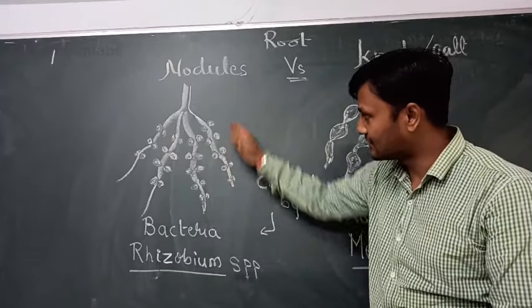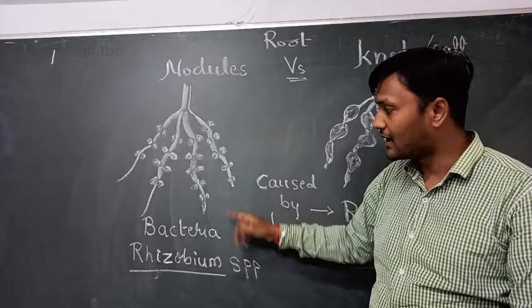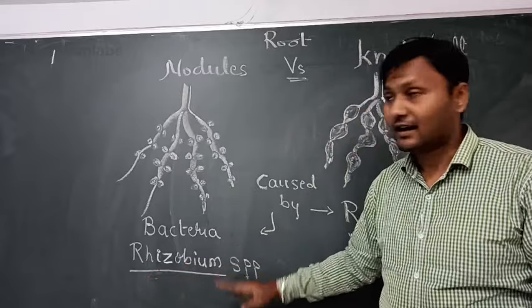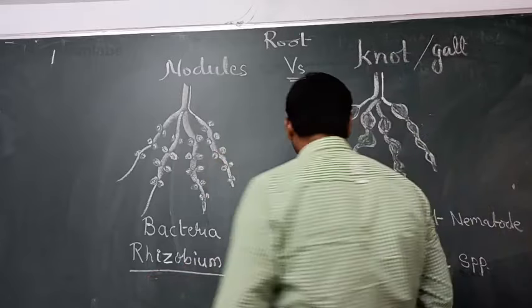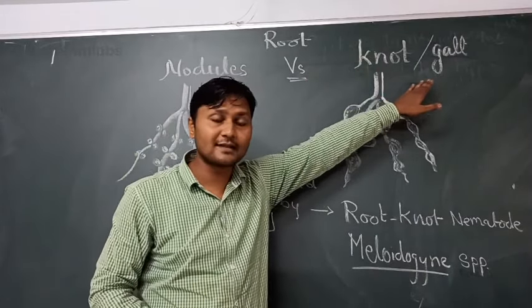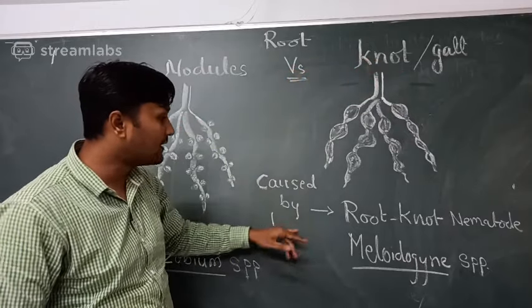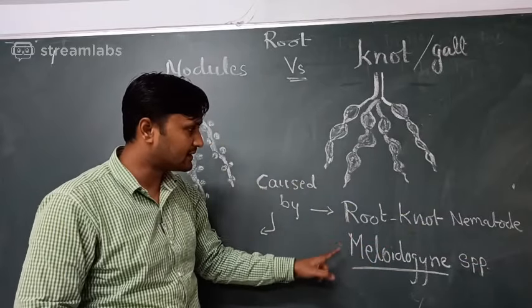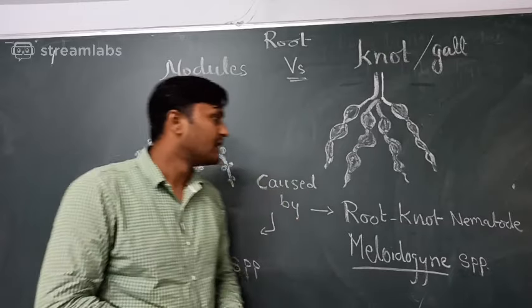First, these nodules are formed by bacteria, a beneficial symbiotic bacteria called Rhizobium. Rhizobium forms the galls on the roots. Whereas root knots and root galls are caused by root knot nematodes, and this nematode's scientific name is Meloidogyne species.